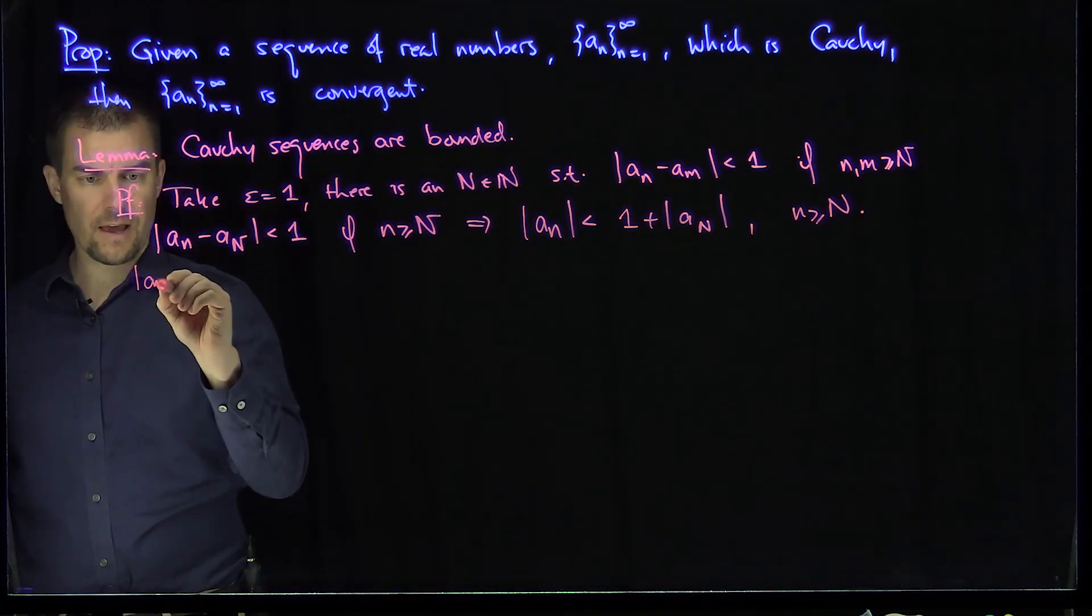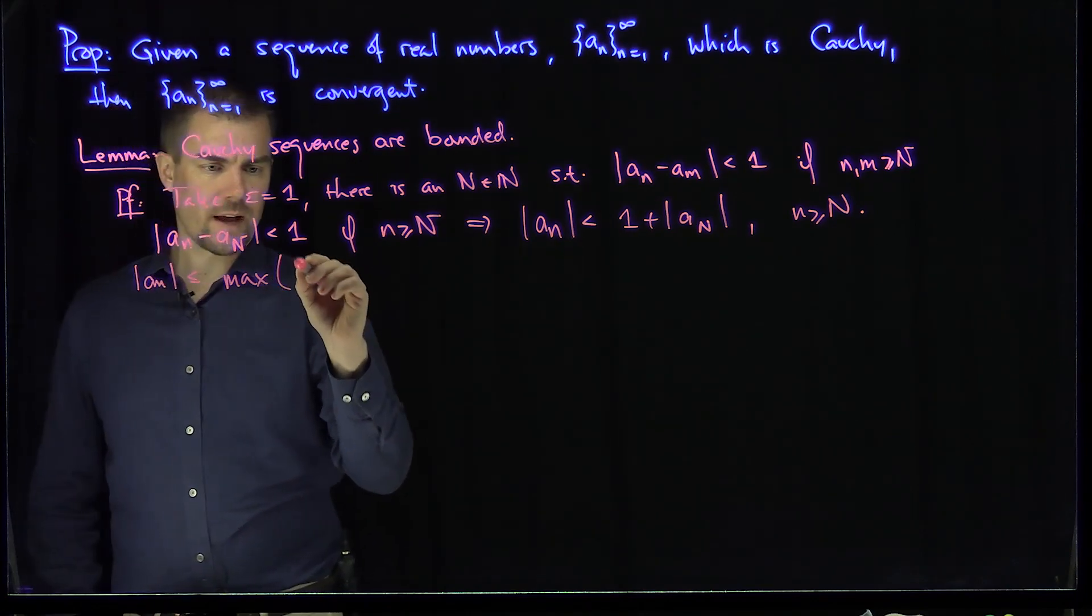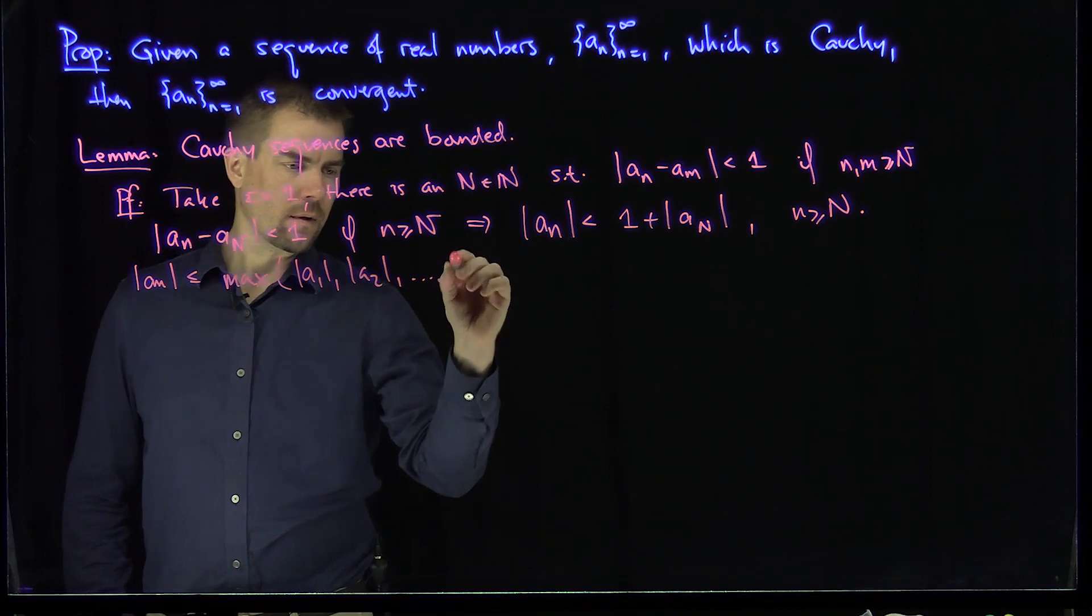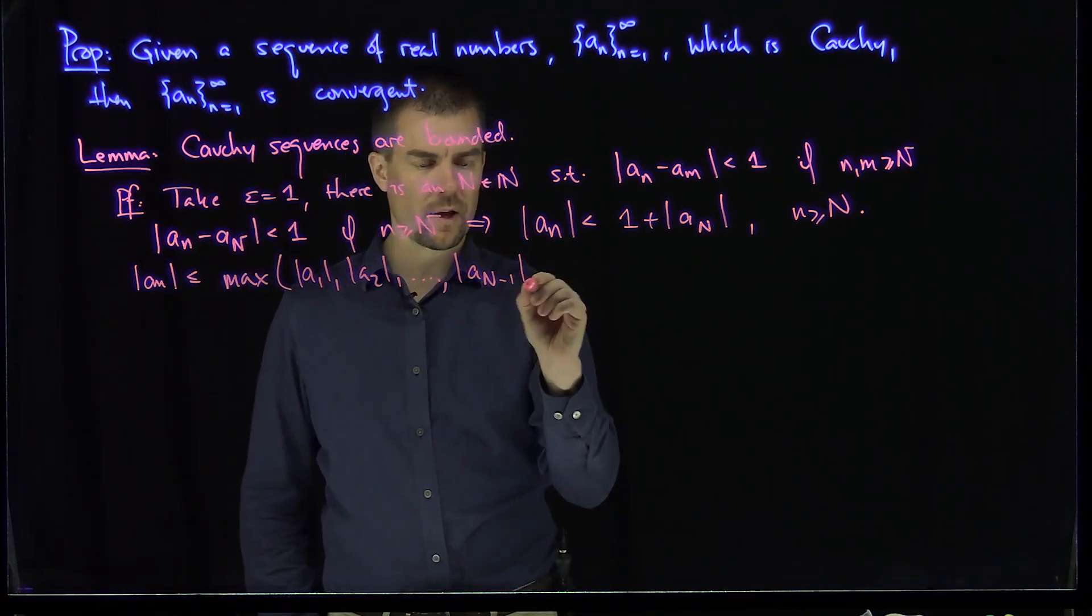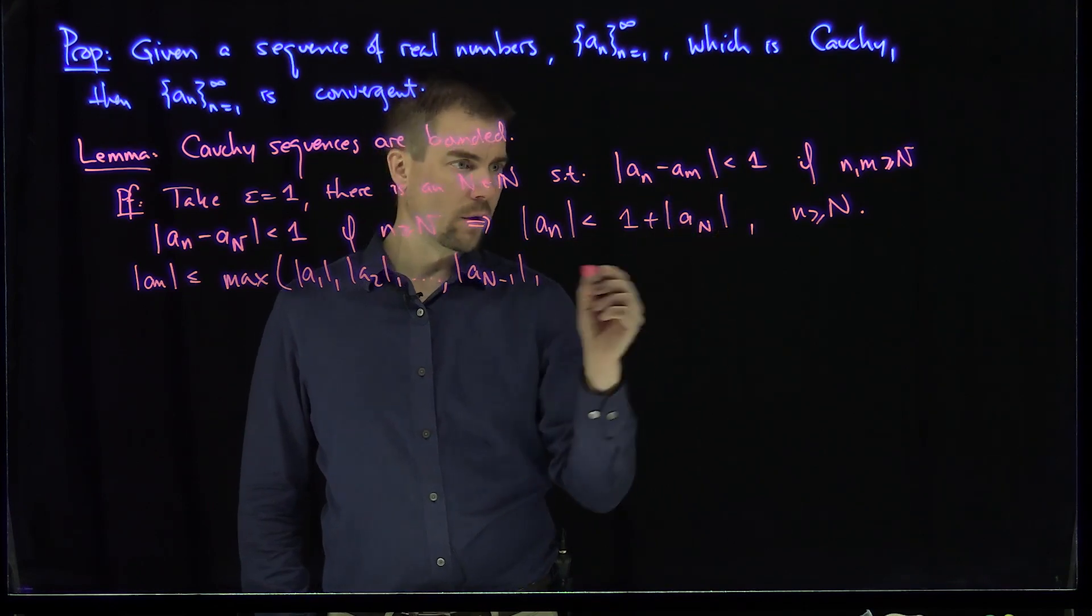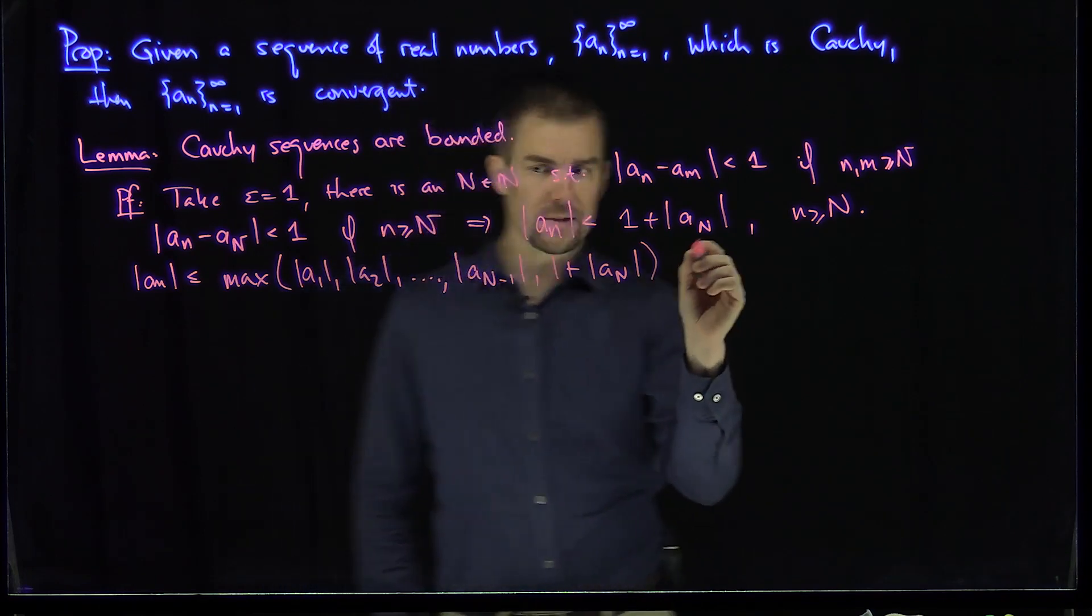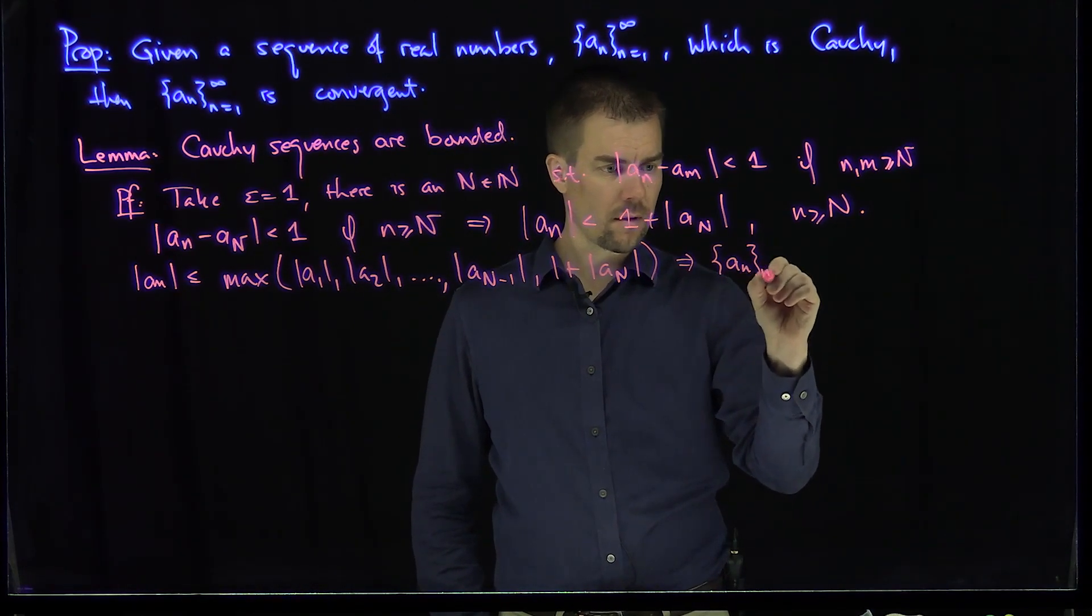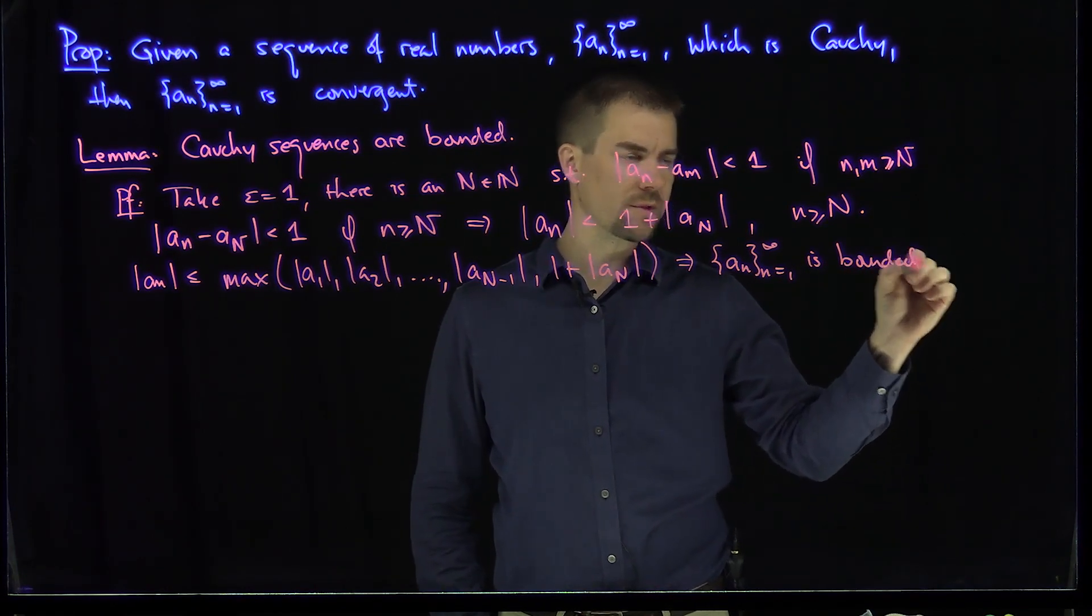And now what I can do is I can therefore claim that the modulus of a_n is less than or equal to the maximum of the set {|a_1|, |a_2|, ..., |a_{N-1}|, 1 + |a_N|}. And so that says that a_n is bounded. So the sequence is bounded. Cauchy sequences are bounded sequences.